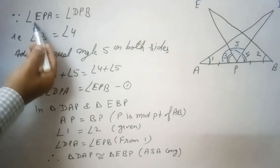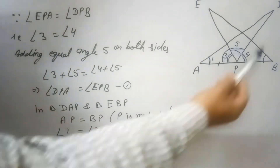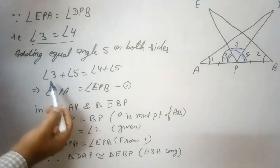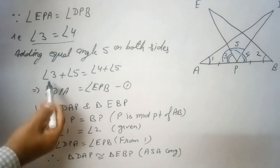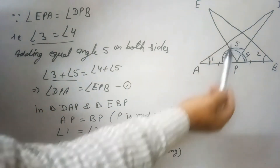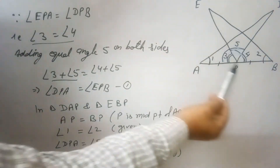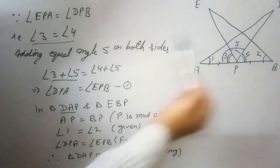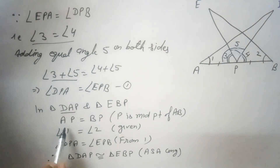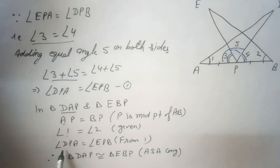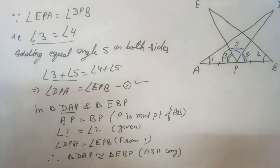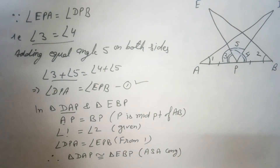Because it is given that angle EPA equals angle DPB, meaning angle 3 equals angle 4. Adding equal angle 5 on both sides, we get angle 3 plus angle 5 equals angle 4 plus angle 5. Angle 3 plus angle 5 becomes angle DPA, and angle 4 plus angle 5 becomes angle EPB — let this be equation 1. Now in triangle DAP and triangle EBP: AP equals PB (given, since P is the midpoint), angle 1 equals angle 2 (given), and angle DPA equals angle EPB (proved from equation 1).